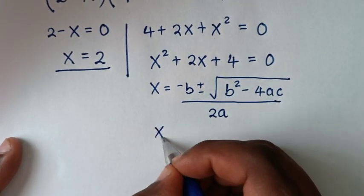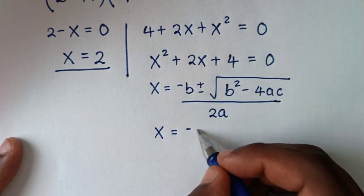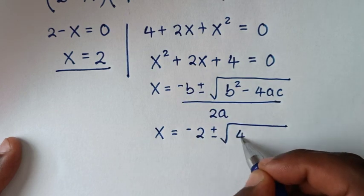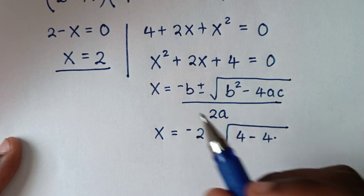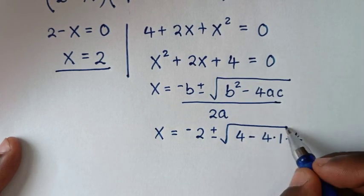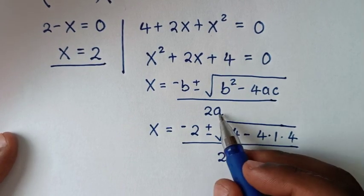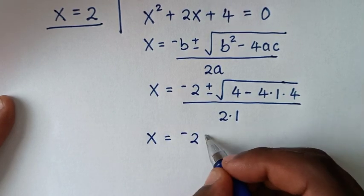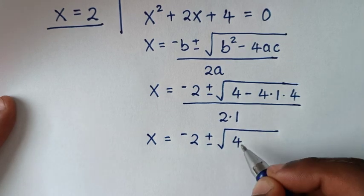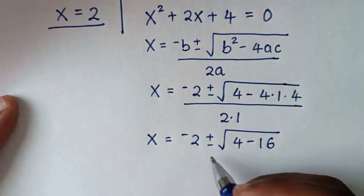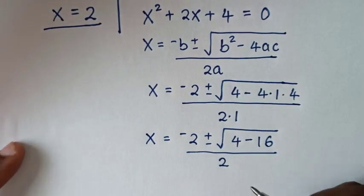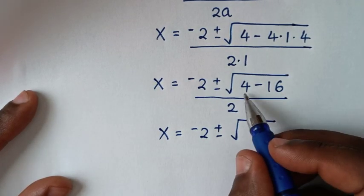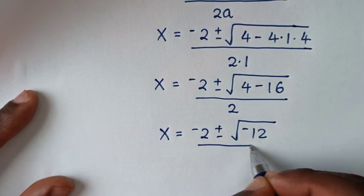So it will be x equals negative b plus or minus the square root of b squared, which is 2 squared giving 4, minus 4 times a — a is 1 — times c — c is 4. In the next step it will be x equals negative 2 plus or minus the square root of 4 minus 4 times 4, which is 16, over 2. So x equals negative 2 plus or minus the square root of 4 minus 16, which is negative 12, over 2.